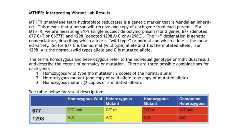Heterozygous mutant means one copy of the wild allele and one copy of the mutated allele. And then homozygous mutant, where there are two copies of a mutated allele. Below in the chart you can see 677.